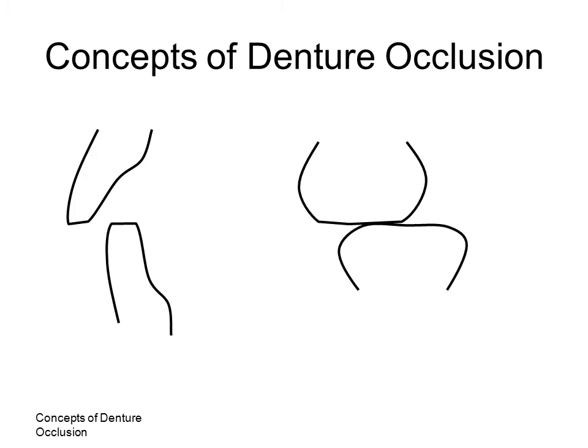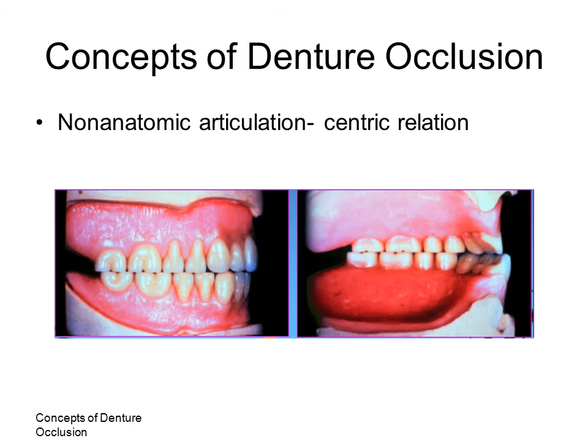In a monoplane non-anatomic articulation with no anterior-posterior compensating curve, there is no contact of the anterior teeth in centric relation. There is no vertical overbite, but there may be brushing contact in eccentric relation. The non-anatomic scheme is shown in centric relation with teeth set with no compensating curve.